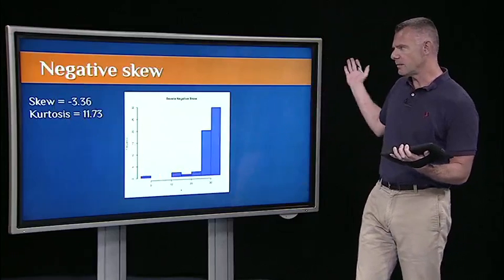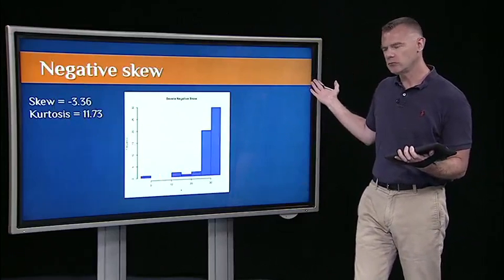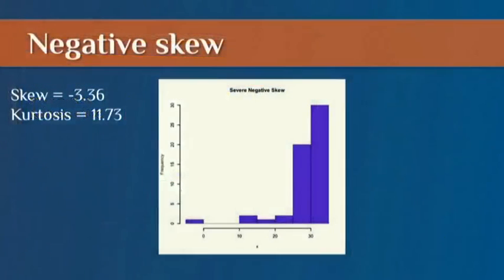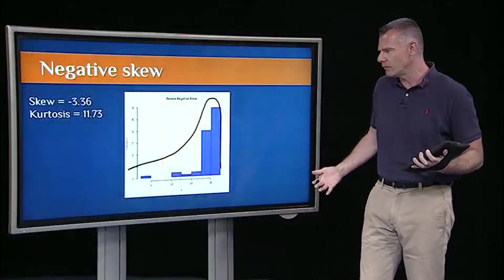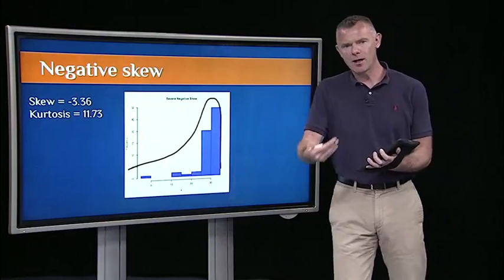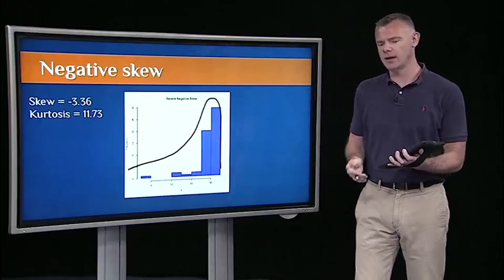Let's do the same thing for a negatively skewed distribution. Now I just have the skew going this way. I have a skew of negative 3.36. It's over that threshold of 3 that makes me worry. Maybe this isn't normal enough for me to apply those inferential statistics procedures that we've covered. Let me apply a transformation and see if that can help.